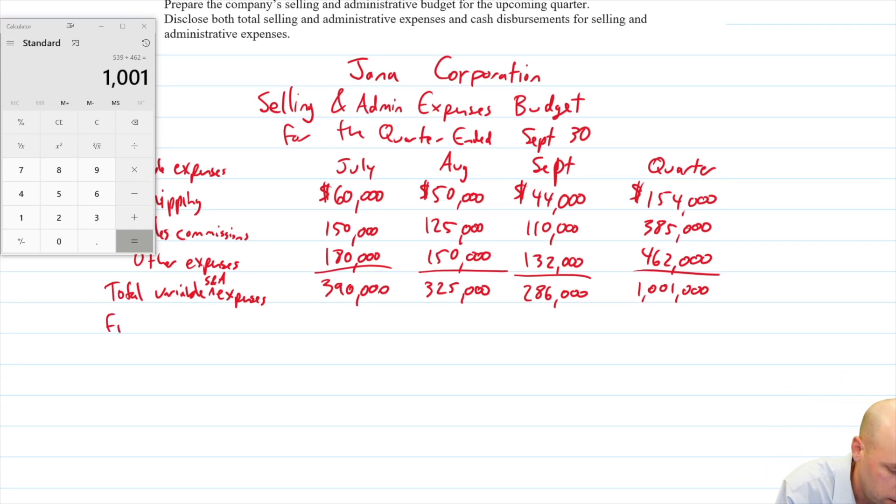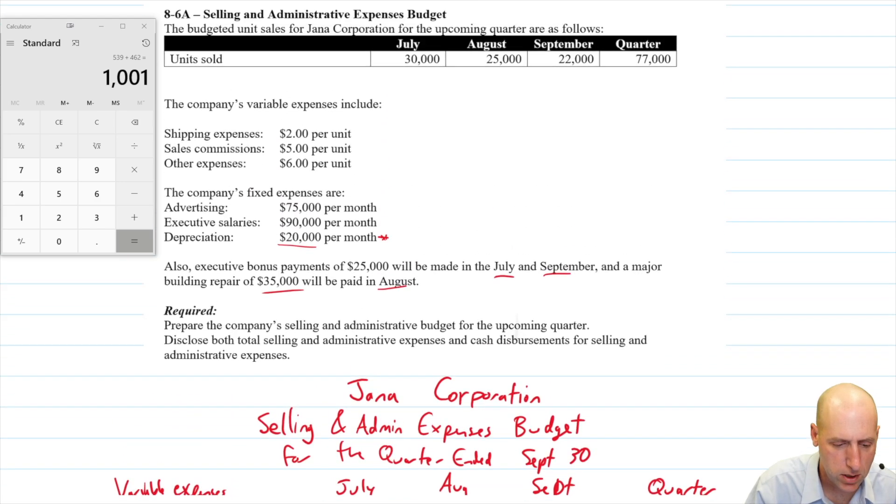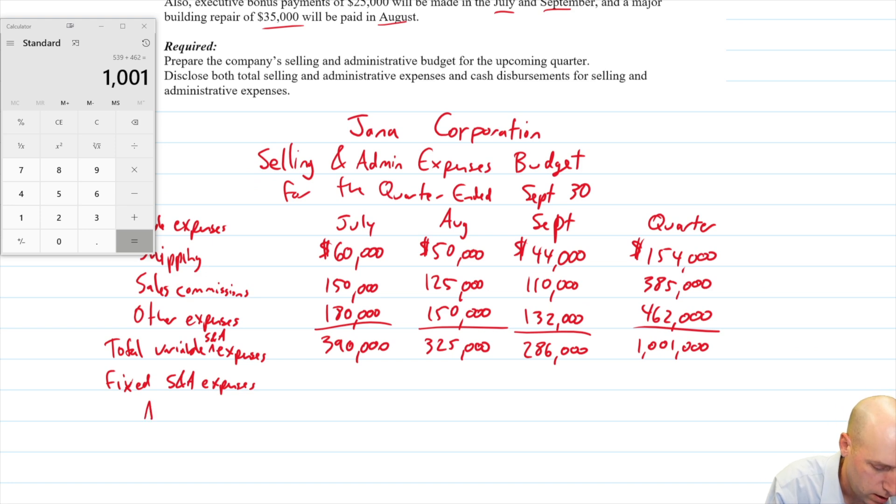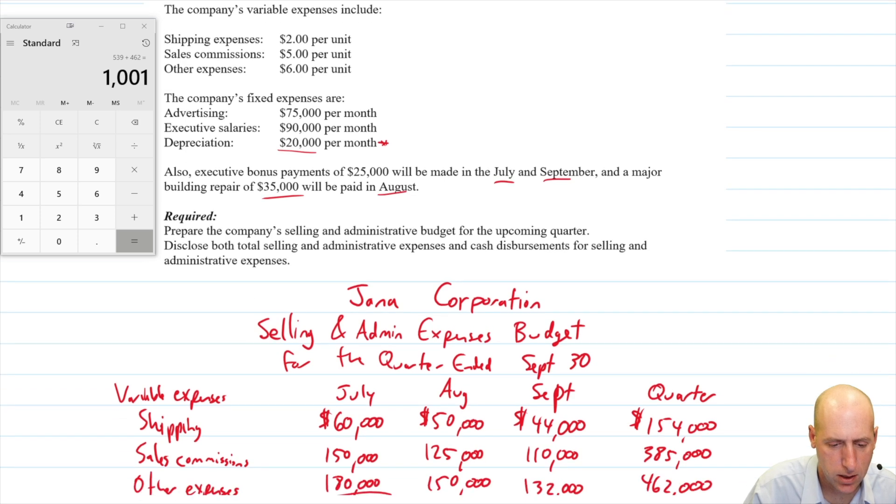Now let's do our fixed selling and admin expenses. And we'll just do them as we see them. Advertising, executive salaries, and depreciation, each monthly. Advertising 75, 75, 75, and this is 225 if we add those three together.